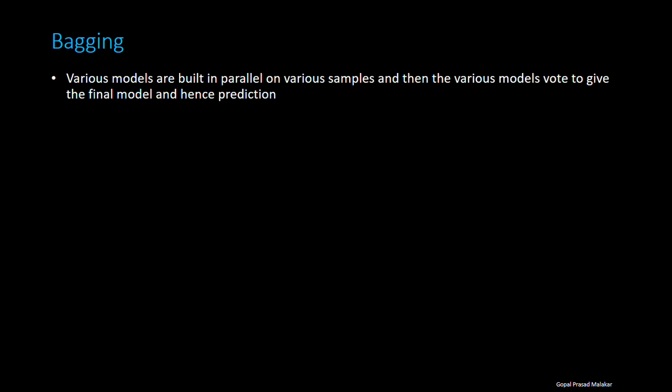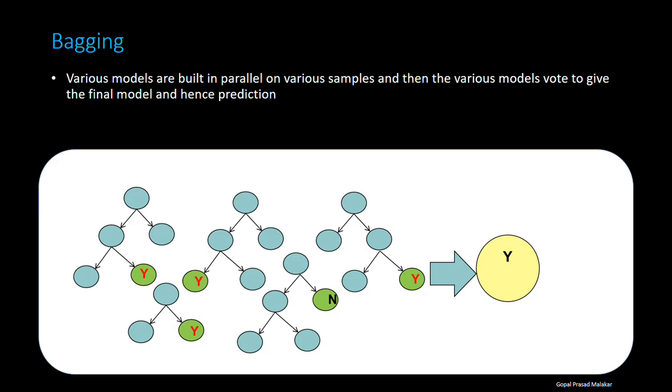If you look at the way you do in random forest, each of the models is predicting Y, which is the class of the dependent variable. Whichever has the majority becomes the final class. Here, four are saying Y and one is saying N, and that's why this becomes the final prediction.